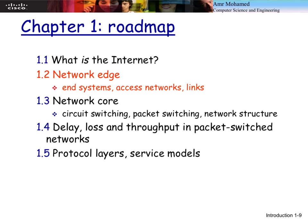Now we'll zoom in and talk about each part of the network. We have the network edge, which is the access network — our entry point to the internet. What are the different types of access networks? And then the core network, because the internet has both an access network and a core network. We'll discuss the technologies in each.